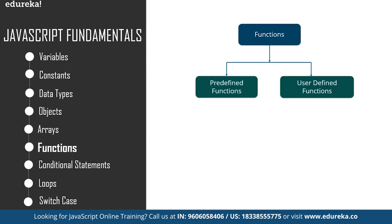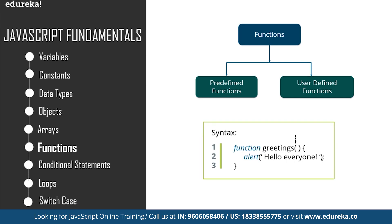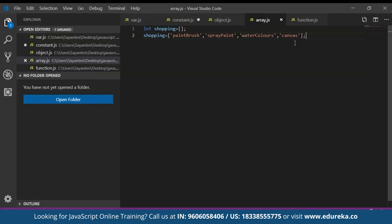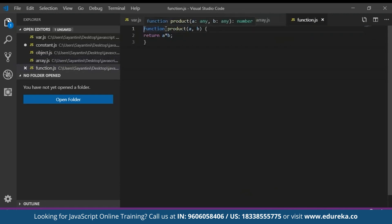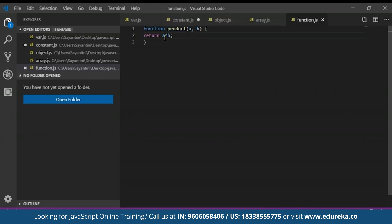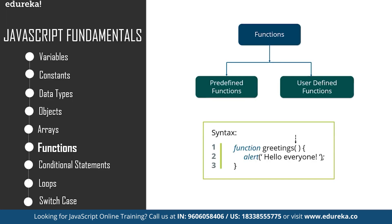A function is basically a block of organized, reusable code that is used to perform a single related action. Let's create a function that calculates the product of two numbers. To declare a function in JavaScript, we use the keyword function. For example: 'function product(a, b) { return a * b; }' — this returns the product of the two variables. Here we have declared a function called product, passed two parameters a and b, and the function returns the product of those two values.